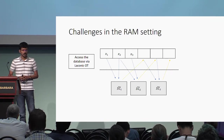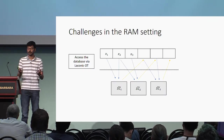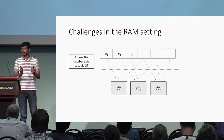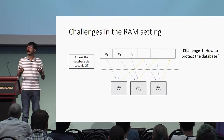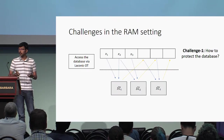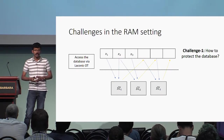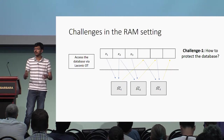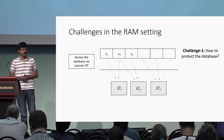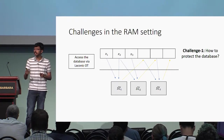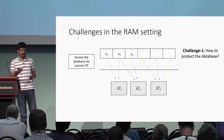In the previous work, which appeared in Eurocrypt this year, it was shown that this construction satisfies adaptive security, but only for the circuit setting. We are interested in the RAM setting, and there are several challenges that arise. The first challenge is how to protect the contents of the database. In the circuit case, the locations accessed by each step circuit are fixed a priori, making protection straightforward — a simple one-time pad was used. In the RAM setting, the locations accessed by each step circuit are chosen dynamically, making protection of the database a highly non-trivial task.